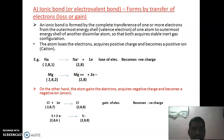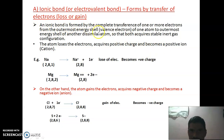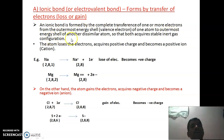Now the first type — ionic bond or electrovalent bond. The electrovalent or ionic compound is formed by transfer of electrons, that is loss or gain of electrons. An ionic bond is formed by the complete transfer of one or more electrons from the outermost energy shell of one atom to the outermost energy shell of another dissimilar atom, so that both acquire the stable inert gas configuration.